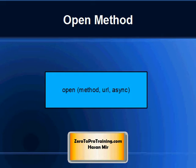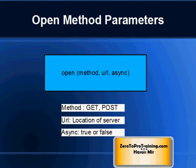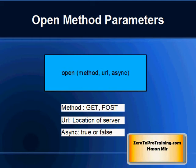On the screen you can look at various options you can select for each parameter. In the Method parameter, you can choose a value of GET or POST. In the URL parameter, you enter the file name of the file you wish to call and its location on the server.